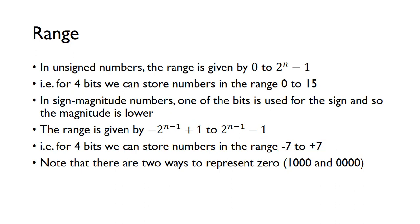There's actually a problem with sign-magnitude: there are two ways to represent zero. The concept of positive zero and negative zero doesn't really make sense, so having two representations for zero is not ideal.